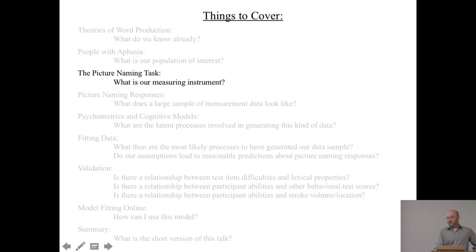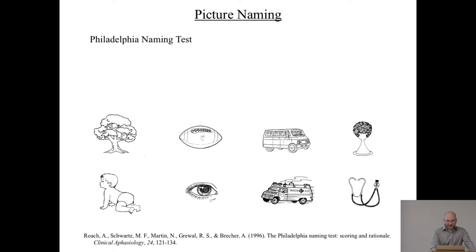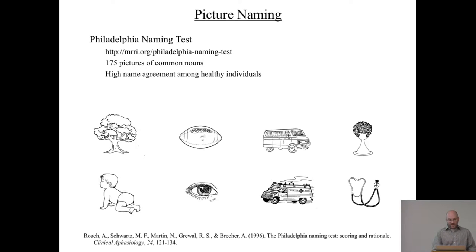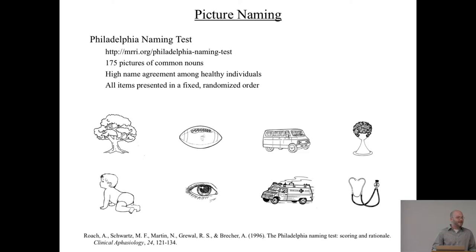We're going to look at picture naming using the Philadelphia Naming Test, a more detailed test developed specifically for research in stroke patients. It's available online for free and has 175 pictures of common nouns — much more than a normal clinical test. The Boston Naming Test goes up to 60, but generally you aim for fewer. There is high name agreement among healthy individuals who have performed this test. All items are presented in a fixed randomized order — everybody sees the same items in the same order.